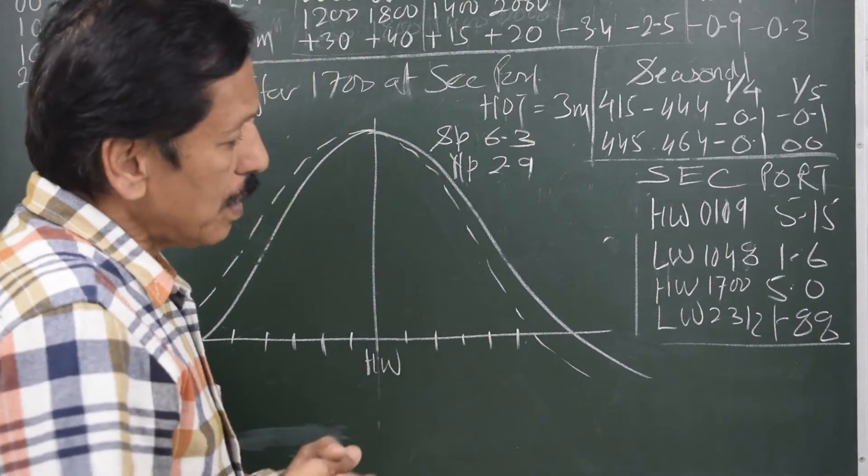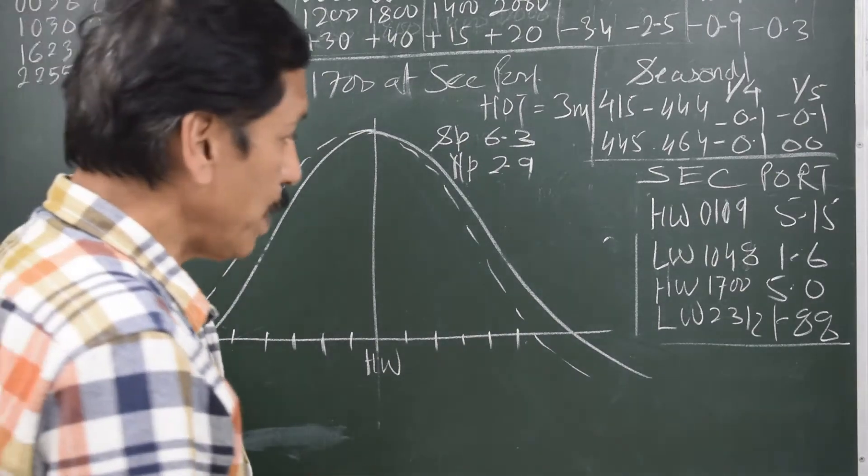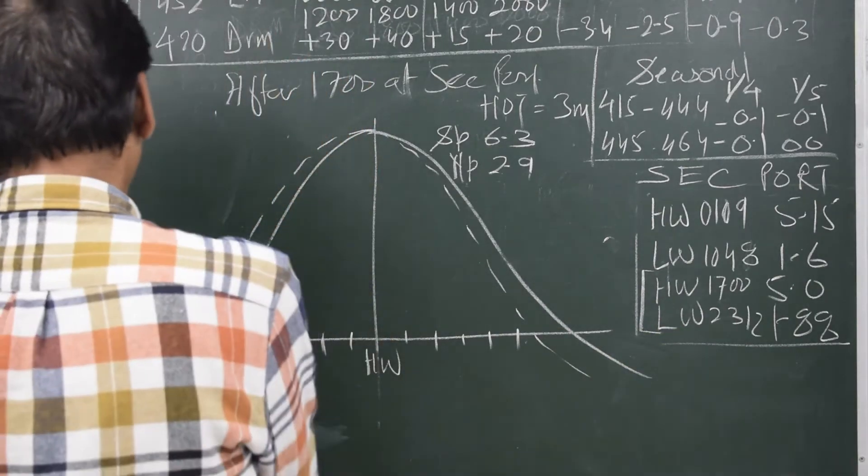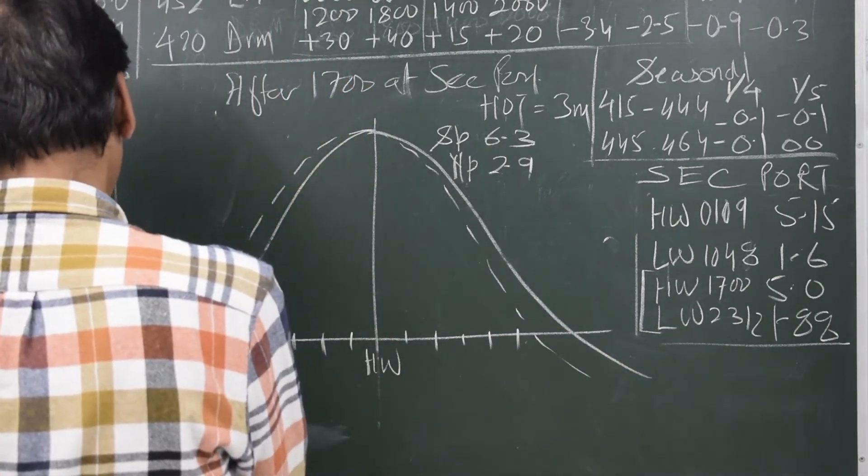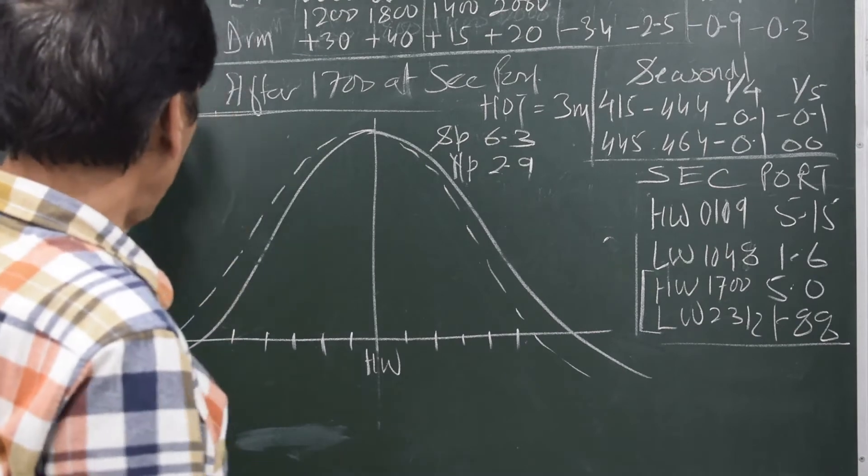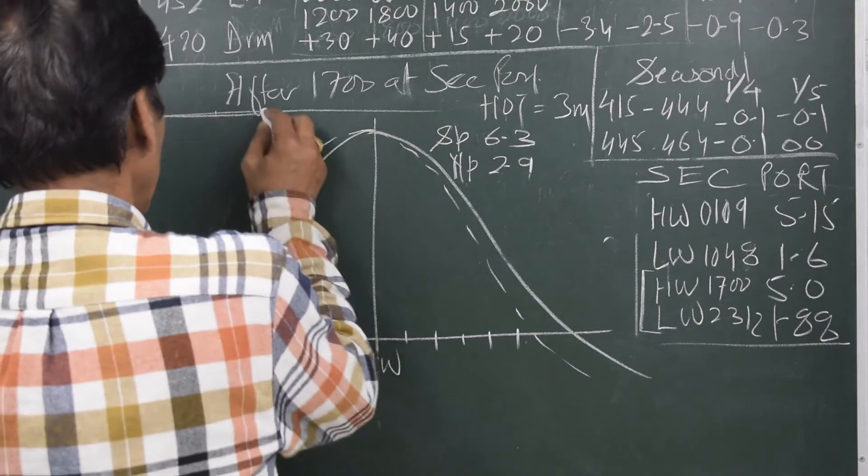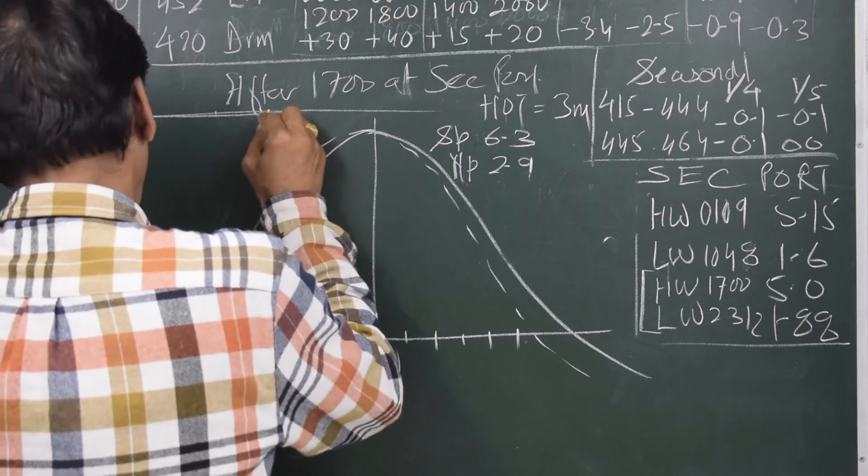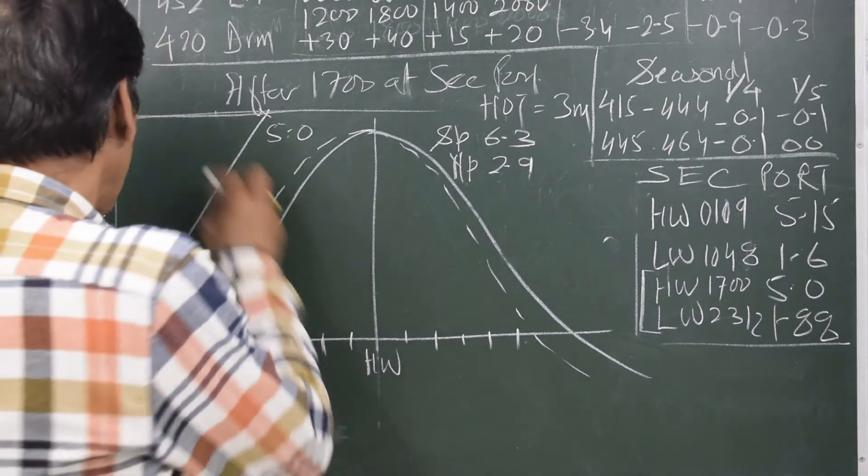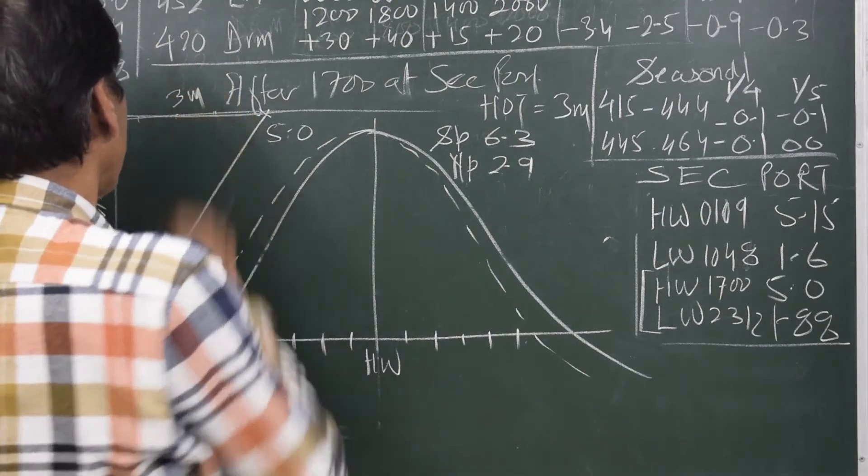Now we want to find out after 1700 when will the height of tide be 3 meters. In other words, we are going to use this window. In this window, the low water 1.88 can be marked here, and there are scales at the bottom and top. On top we will mark off 5.0, so this is 5.0. I join 1.8 and 5.0 by a straight line. This would be an interpolating line, so somewhere here I will get 3 meters height of tide.